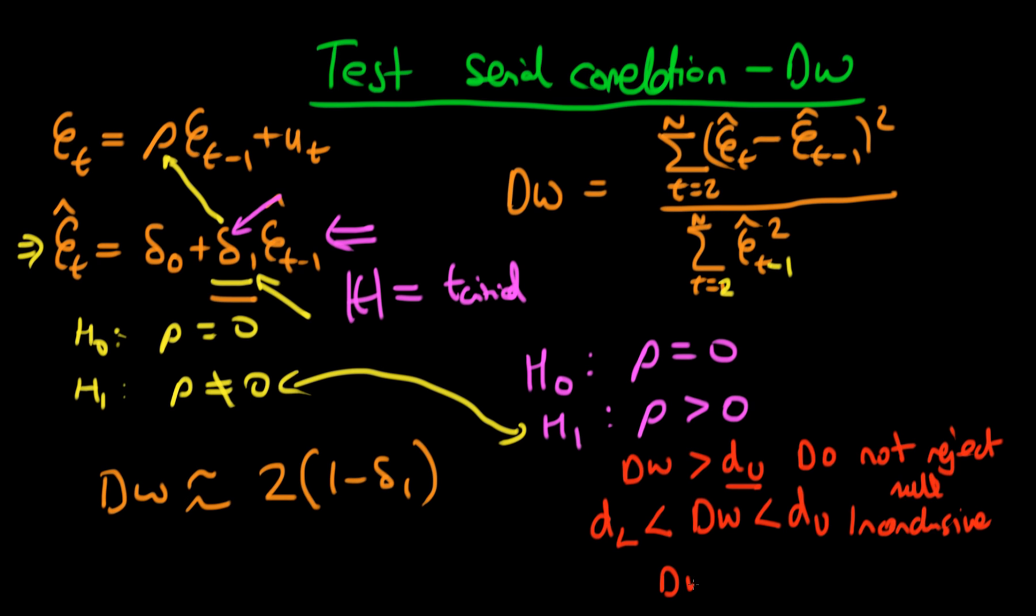And then finally, as you might expect, if the Durbin-Watson statistic is less than some sort of lower critical value, only in that circumstance do we reject the null hypothesis.